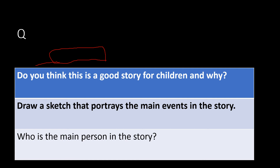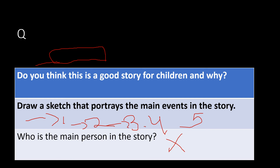'Who is the main person in the story?' — it's very directly mentioned, like when you watch a movie you know who the hero is. You are evaluating nothing; it's obvious. Remove this distractor. 'Draw a sketch that portrays the main events in the story' — you are drawing event one, two, three, four to the last, simply copy-pasting the events into a sketch. Are you evaluating? No. Remove it. 'Do you think this is a good story for children and why?' — here there is an information gap. You have to single out information by drawing a conclusion and making an argument.